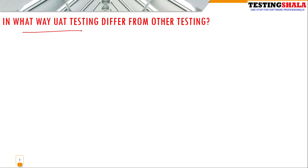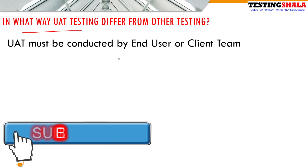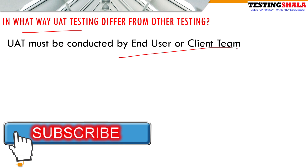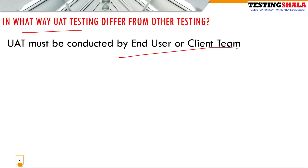The first interview question is: in what way does UAT testing differ from other testing? UAT testing is another form of testing — normally testers will be doing various kinds of testing in their development phase. The main difference is that UAT testing is conducted by the end user. That is the major difference between any other testing and UAT testing.